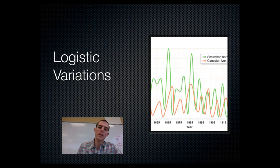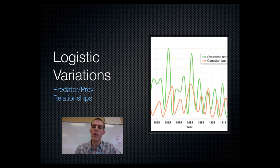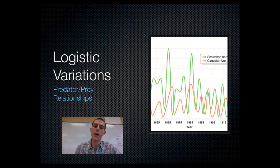Another variation on the logistic model is the representation of a predator-prey relationship. The graph on the right shows the population of snowshoe hare and its predator, the Canadian lynx, over a long period of time. Research has found — and it would make sense — that these populations go together.